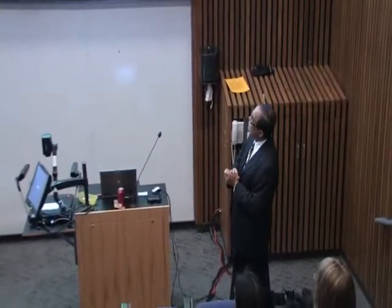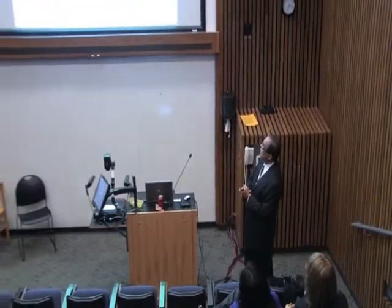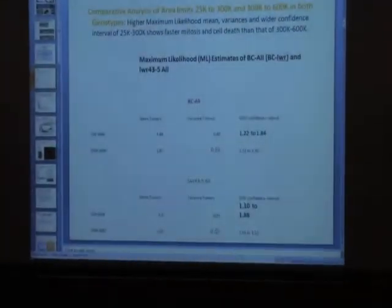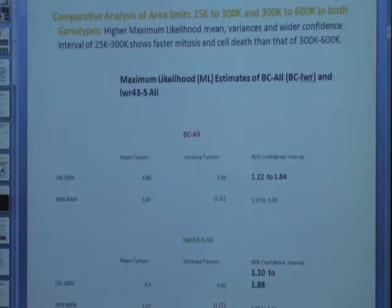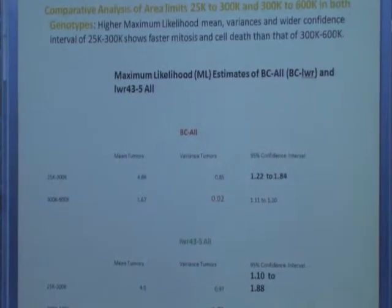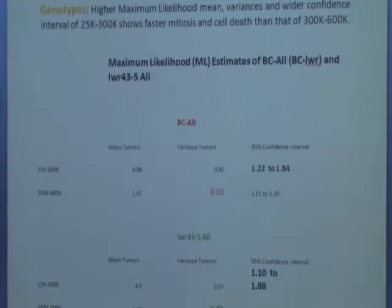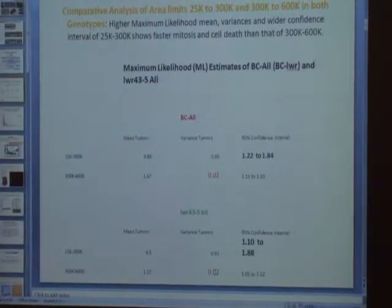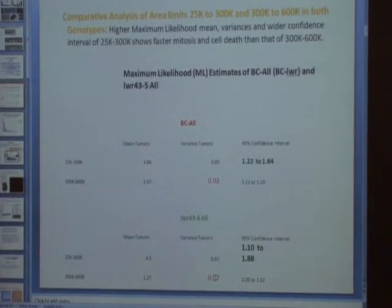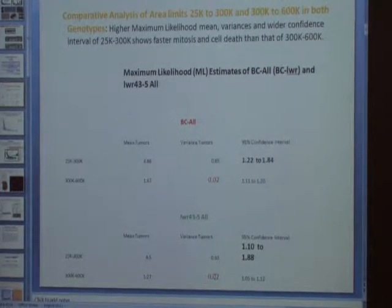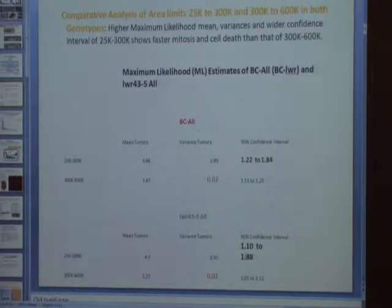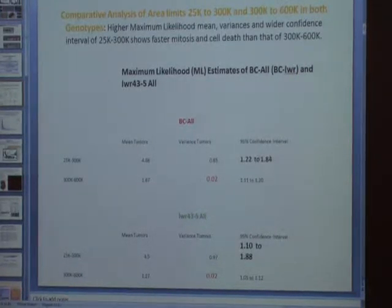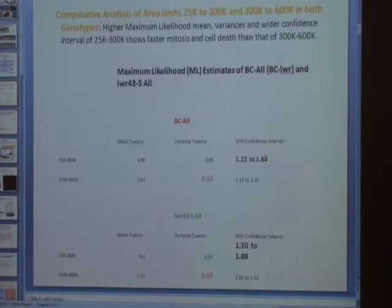After looking at that, I decided to do the maximum likelihood analysis because the BC gene — both of them — are divided into two subpopulations: one from 25K to 300K size and the other from 300K to 600K size. What is very interesting is that when you look at the confidence interval, this one would be totally inside the other, like an egg in a shell, packed up like that.